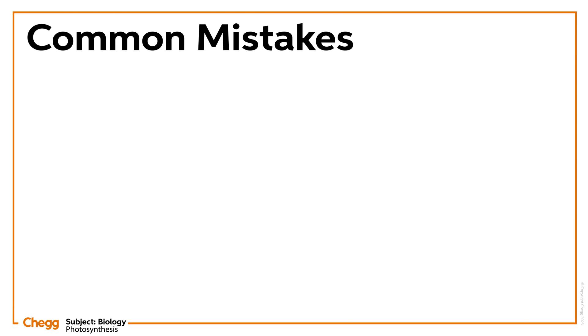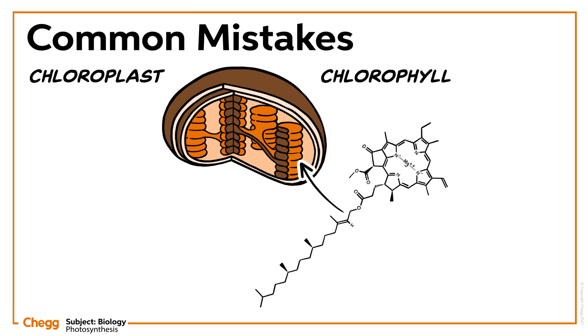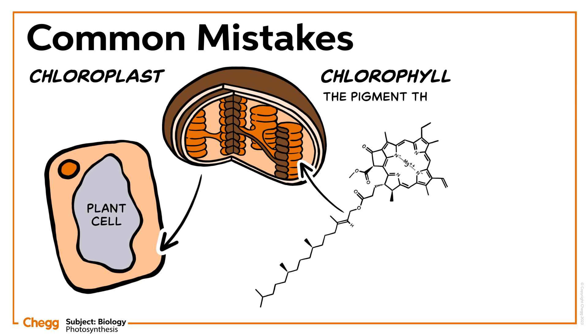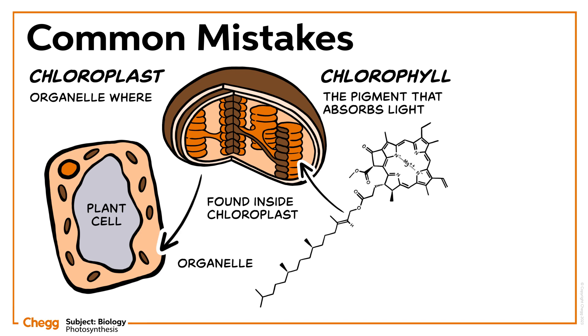Common mistakes: Don't get confused between chlorophyll and chloroplast, as they hold different functions. Chlorophyll is the pigment that absorbs light and is found inside the chloroplasts. The chloroplast is the organelle where the process of photosynthesis takes place.